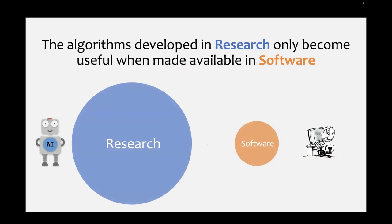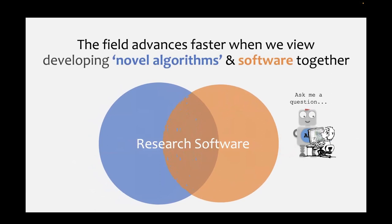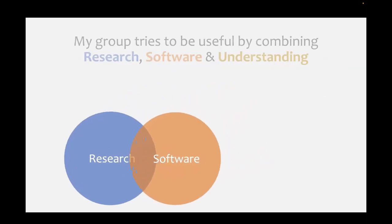Something I've come to believe is pretty important: algorithms developed by researchers are exciting proof-of-concept methods, but what people actually do in practice depends on what's available to them in software. In academia, there's too much emphasis on novel algorithms, but what is actually used is always filtered through software - only a very small subset of the algorithms supposedly available in the literature. I think these should be viewed as equally important. The development of novel algorithms is difficult, and the development of software is certainly not any easier - if anything, more difficult.